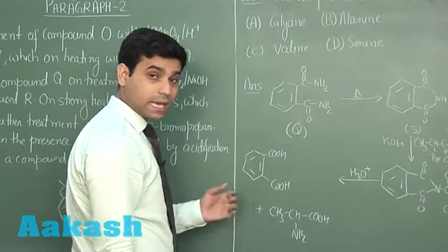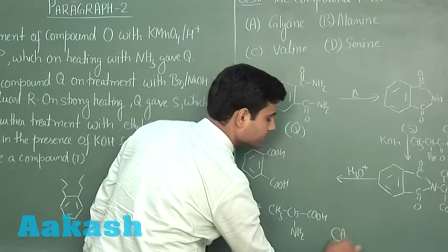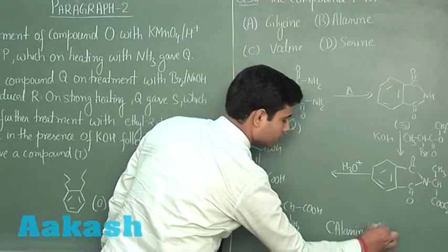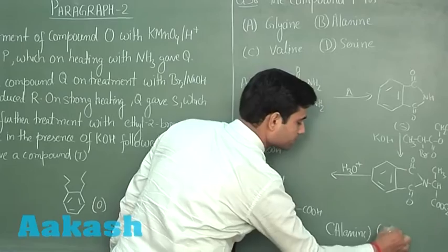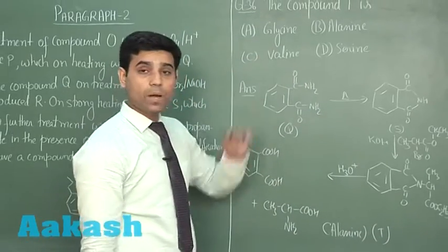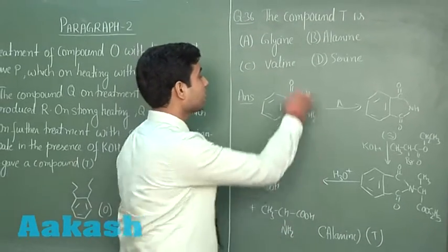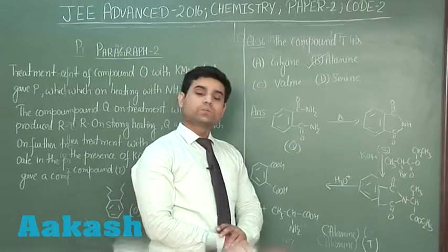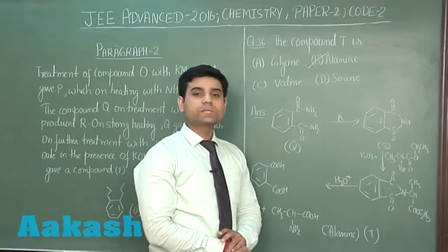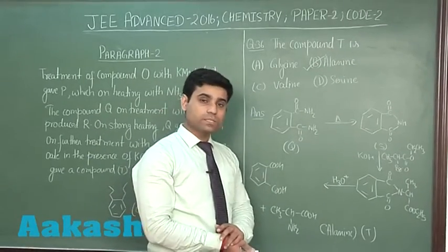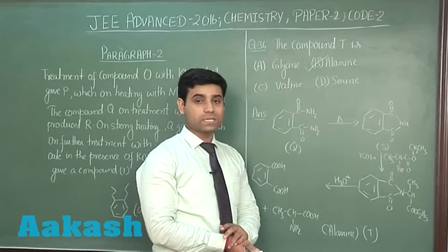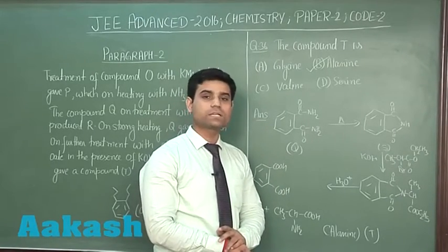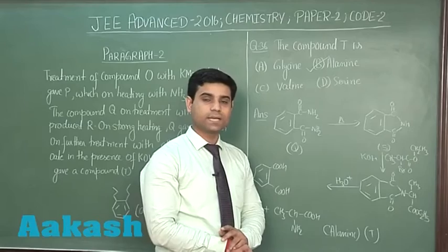This product is alanine, which is compound T. So the compound T is alanine, and the correct answer for this question is option B. This was the last question for JEE Advanced 2016, and this is all about today's discussion. All the best to the students for the results. Thank you.